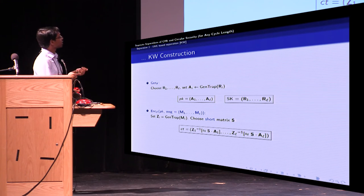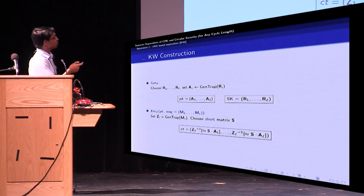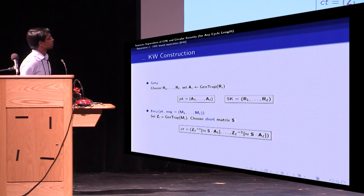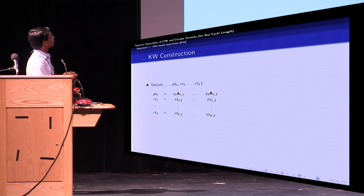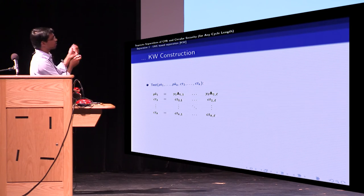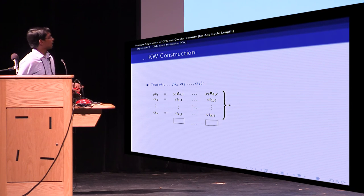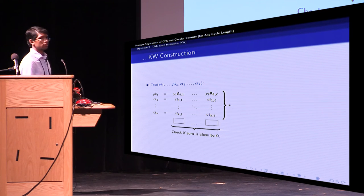So note that this is very similar to the leader encryption, except that we are using S times A_i instead of S times X_i. For the test algorithm, we have the first public key and the K ciphertexts. We compute the product of each column, and then check if the sum of the products is close to zero.